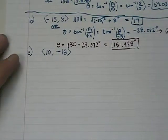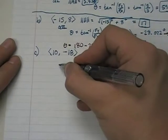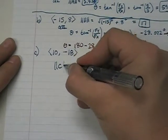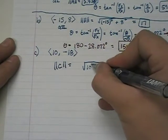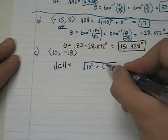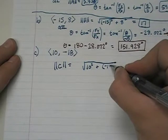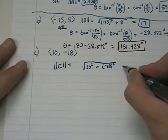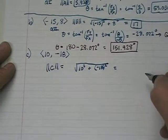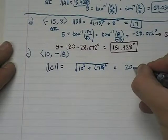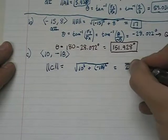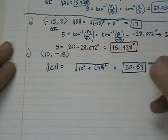Part C. It gets kind of repetitive, folks. If I ask you to find the magnitude of vector C, it's going to be the square root of the x component squared plus the y component squared. If I square 10 and I square negative 18, add that up and take the square root, I get 20.59 is the magnitude.